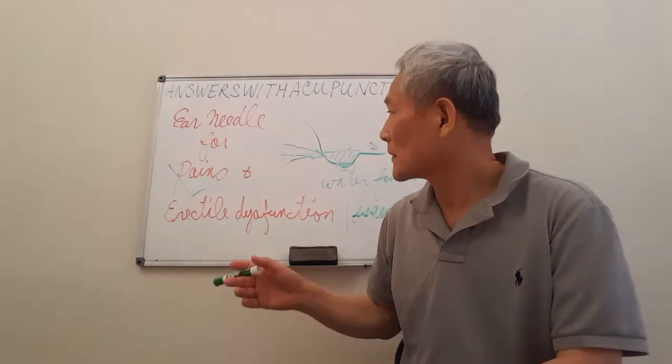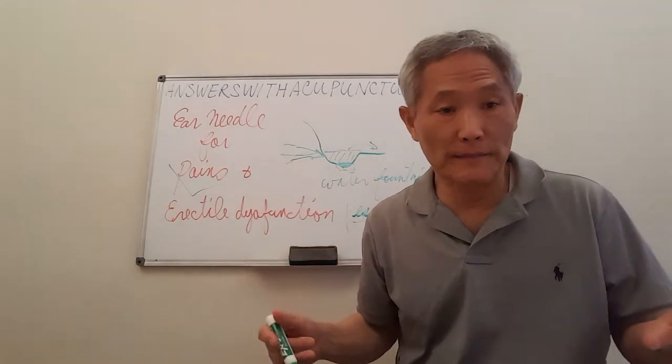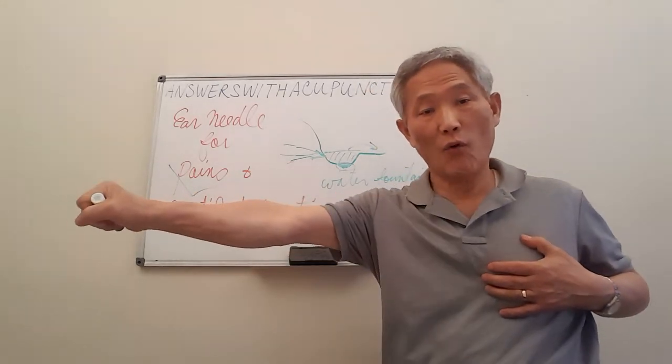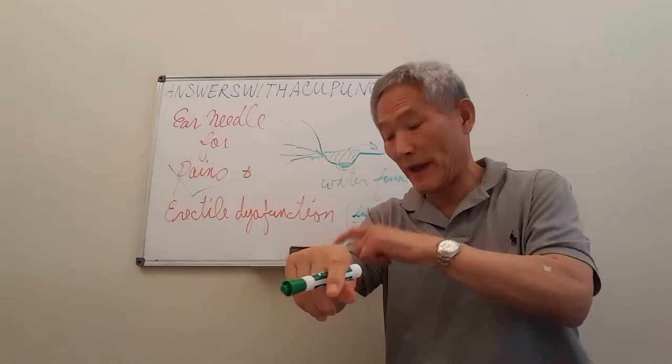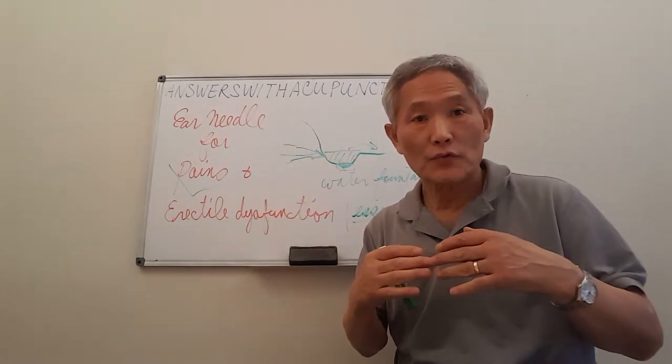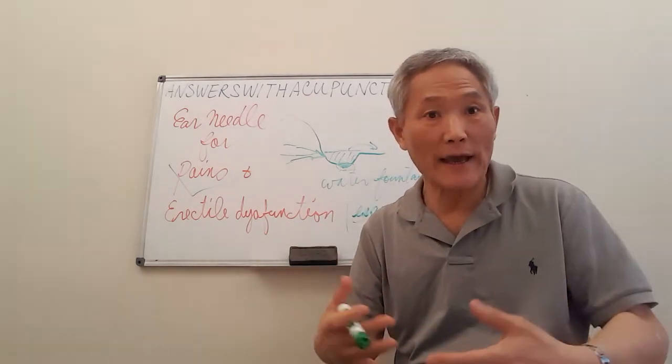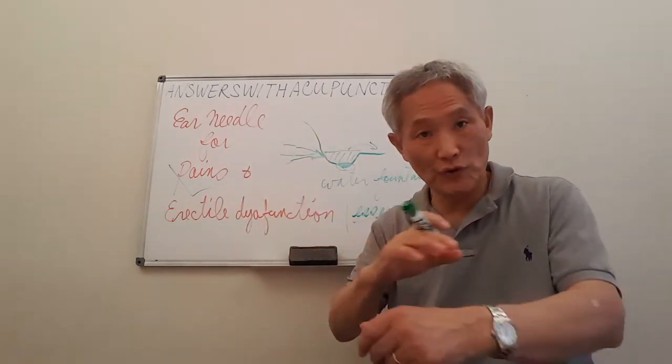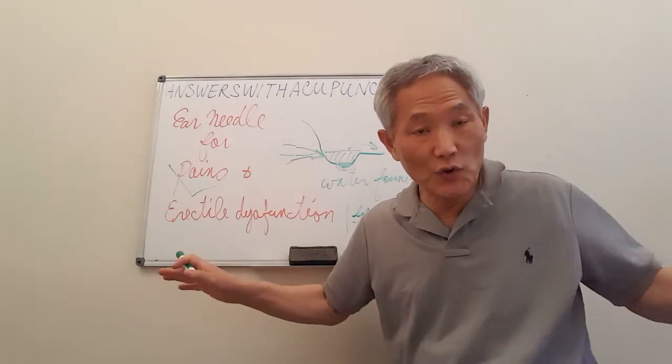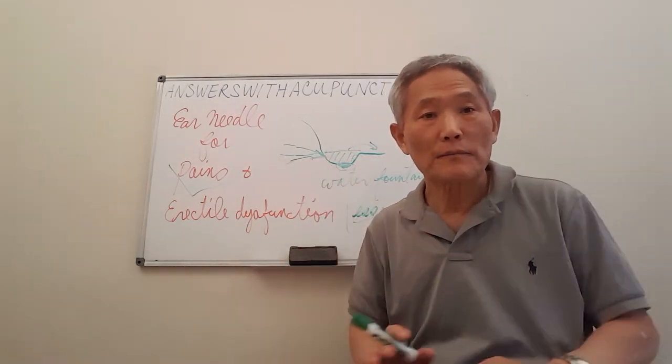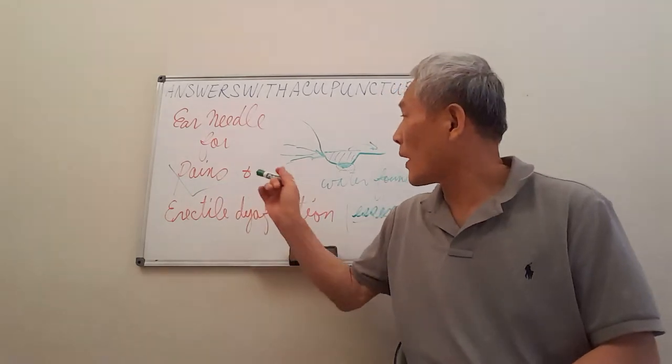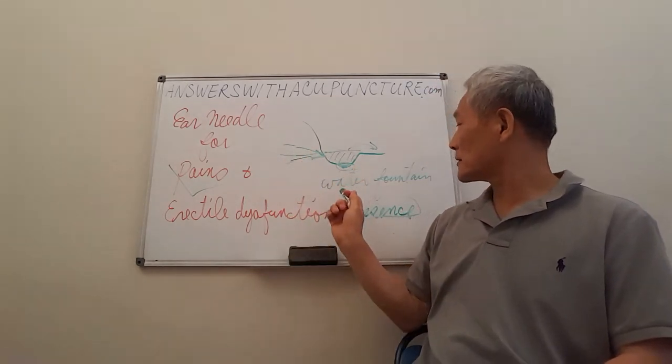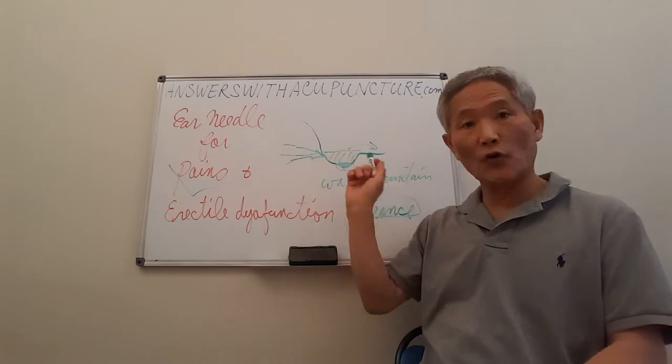Why? When we have pain, our heart tries to send more blood into that pain area to supply more oxygen and nutrition. More nutrition and oxygen come to the painful area, and then no more pain. Once all this blockage is connected, the water fountain will be solved automatically.